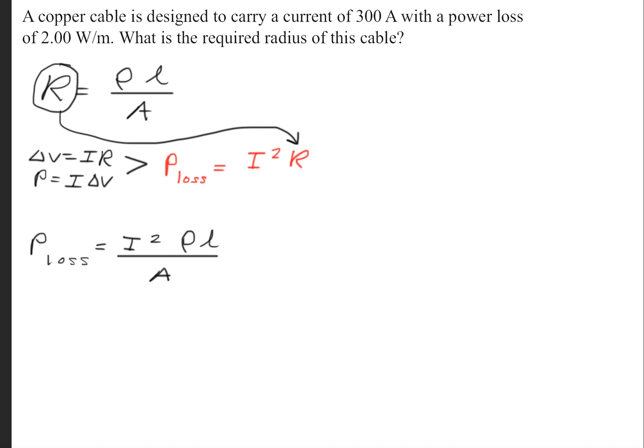The next thing we'll do is we'll take that resistance found in the first formula and make a substitution into the resistance in the power loss formula, resulting in P equals I squared times rho times L over A.